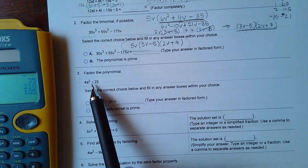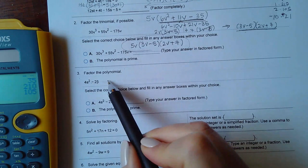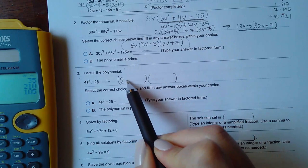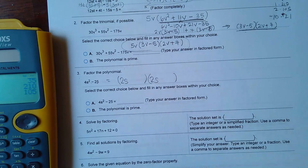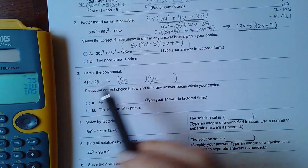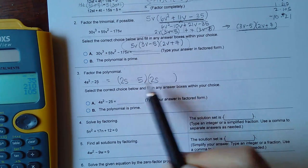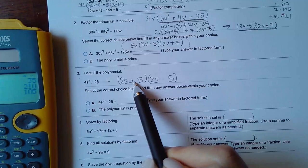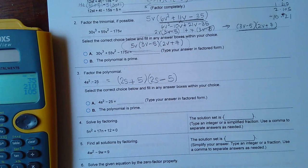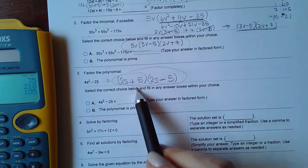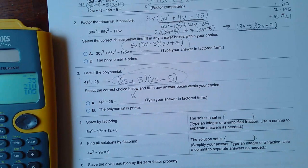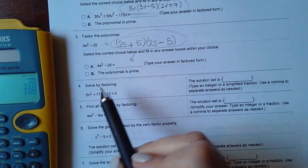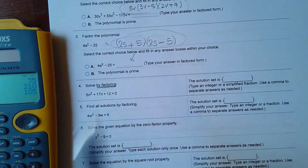For number three it says factor this polynomial. This is a difference of two perfect squares, so what times what gives me 4s²? 2s times 2s gives me 4s². And then what times itself gives me 25? That would be 5 and 5. One has to have a plus, one has to have a minus, and this is what you would enter in the MyMathLab. Number four says solve by factoring so I have to use the method that they're asking.